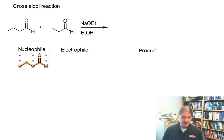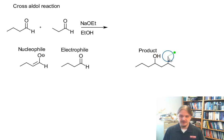So we could have butanol as both the nucleophile and the electrophile. And of course, what nucleophile means is that butanol is present in its enolate anion. It's also present as the electrophile. And we would get a product that looks like this.